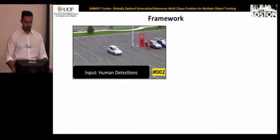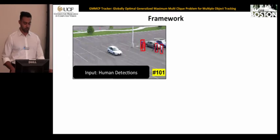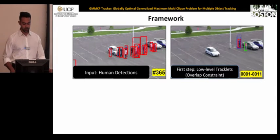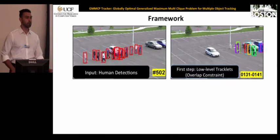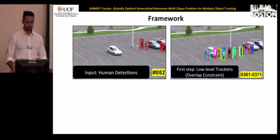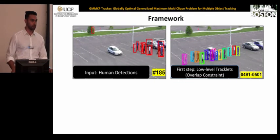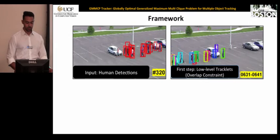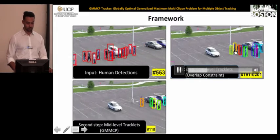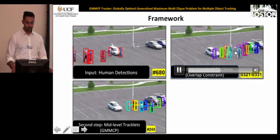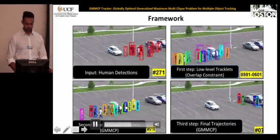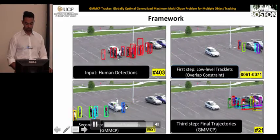Our framework has three main steps. We start with a pre-trained object detector to get object candidates in every frame. Then we build low-level tracklets using simple overlap constraints — detections with more than 60% overlap in consecutive frames are connected, with maximum length 10 frames and minimum length 5 frames. We use GMMCP on these to produce mid-level tracklets of maximum 50 frames, and then apply GMMCP again to get the final tracks, shown after smoothing.